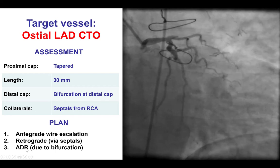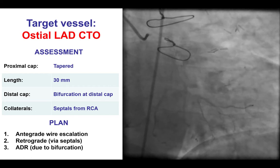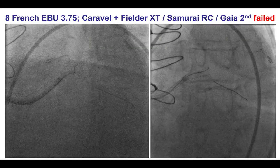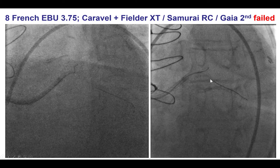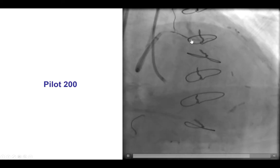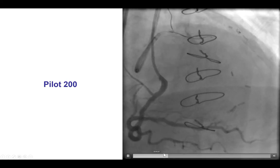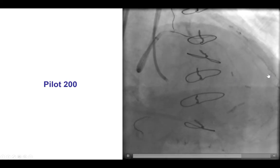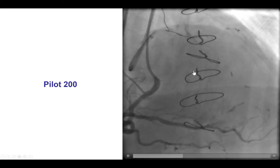Although we have shown recently that one can do re-entry into both branches and achieve good re-canalization. Escalation was done with the Caravel, Filament XT, Samurai RC, and Gaia 2nd, but did not progress much. In cases with proximal LAD, it is advisable to have a safety workhorse wire into the circumflex in case there's a dissection or some issue at the ostium of the circumflex or the left main. There is a dual injection with the wire trying to be advanced from the LAD, and we do see the LAD filling via septal collaterals, with a bifurcation on the distal cap.